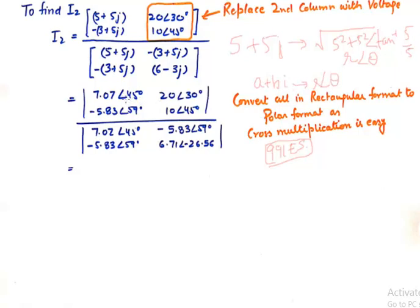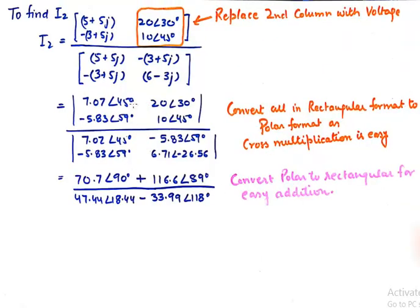Now why is it important to convert these formats which are known as rectangular formats into polar formats, because multiplication is facilitated in the polar format very easily. So if we were to multiply 7 into 10 the angles are added and similarly cross multiplication will give me this.